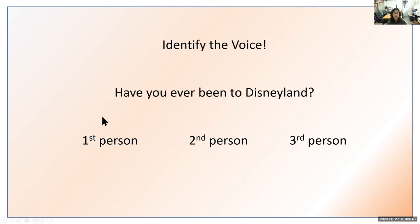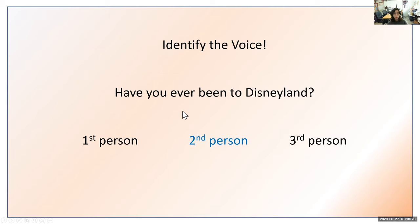Let's try another example: Have you ever been to Disneyland? Is that first person, second person, or third person? Refer to your piece of paper to figure it out. If you said second person, you are correct. We know it's second person because of the pronoun you. We don't have I, we don't have he or she — we have you, and you refers to second person. It's important to refer to our chart of pronouns.